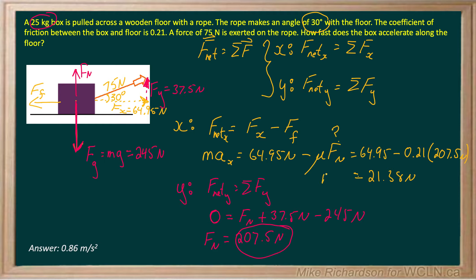Let's get rid of some of the clutter. So I get max is 21.38. My mass is 25 kilograms. So when I divide both sides by 25, I get an acceleration in the x to be 0.86 meters per second squared. And obviously, it'll be to the right.